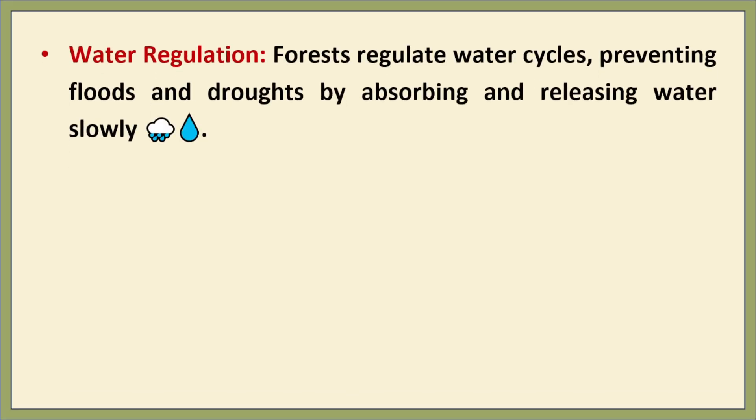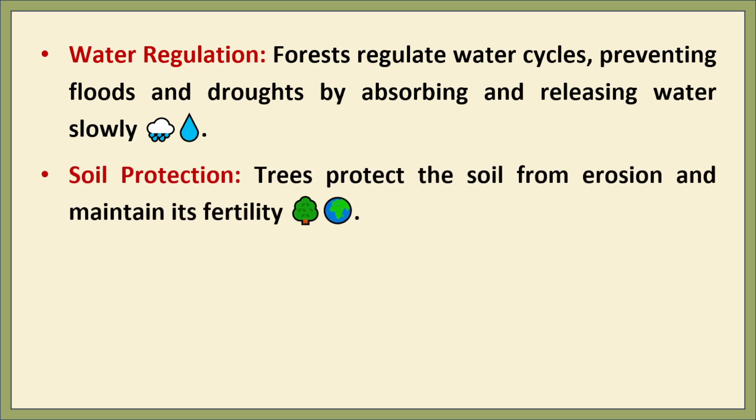Number three: water regulation. Forests help in regulating the water cycle. The trees absorb rainwater and slowly release it into the river and groundwater system, preventing both flood and drought. Number four: soil protection. Tree roots bind the soil, preventing erosion. They reduce the impact of rain on the soil, and leaf litter enriches the soil with organic matter, maintaining fertility.